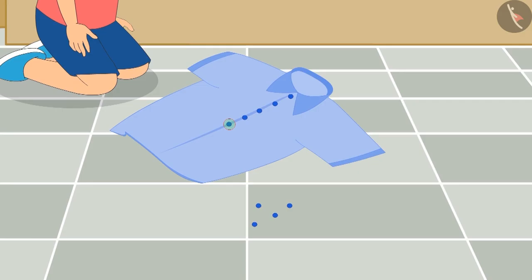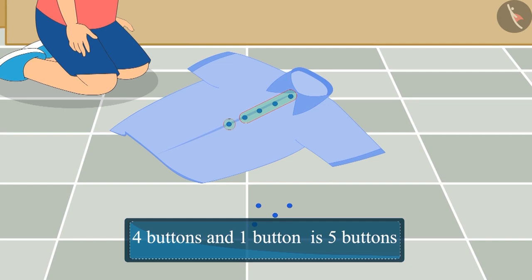Now Chotu has stitched one more button on his shirt. So four buttons and one more button is five buttons.